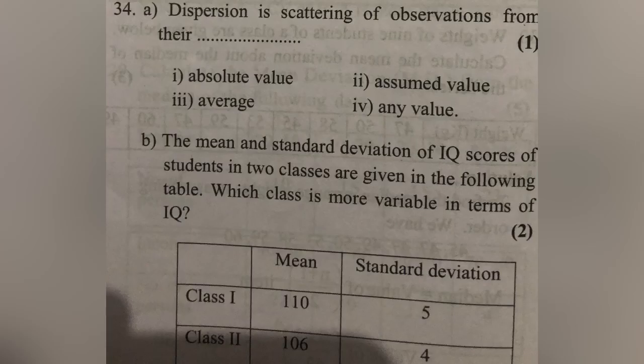Dispersion is the scattering of observations from their average. The average represents the central value, and dispersion measures how far observations spread from that average.